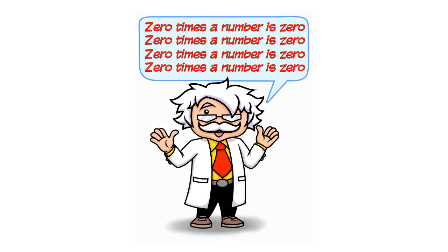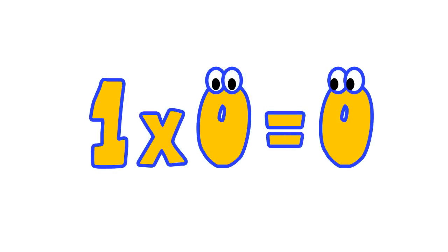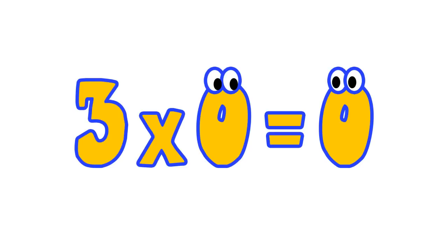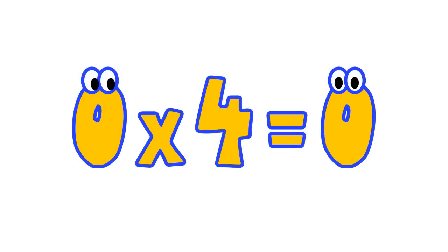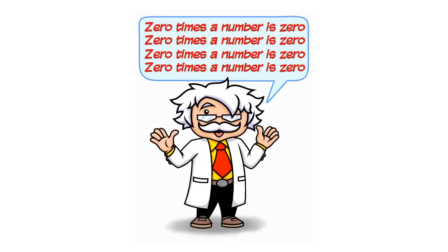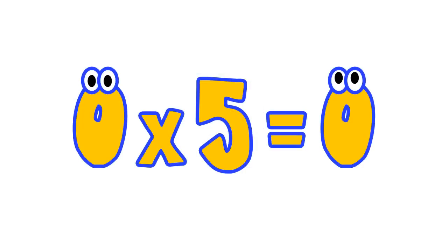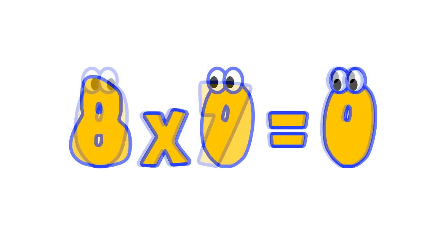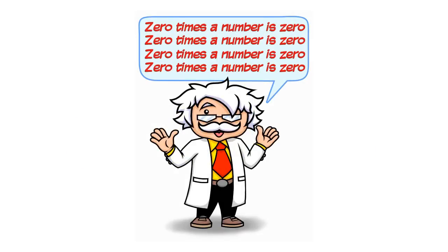Zero times any number is zero. One times zero is zero. Zero times two is zero. Three times zero is zero. Zero times four is zero. Zero times five is zero. Six times zero is zero. Zero times seven is zero. Eight times zero is zero.